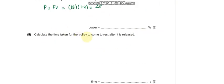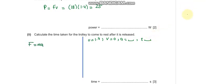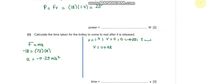Part B asks to calculate the time taken for the trolley to come to rest after it is released. Initial velocity u is 1.5 m/s, final velocity is 0. Using F equals ma, the opposing force gives acceleration of −0.25 meters per second squared. Applying v equals u plus at and making t the subject, the answer is 5.6 seconds.